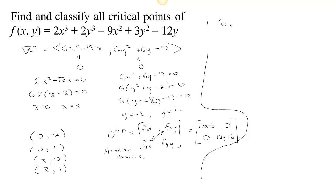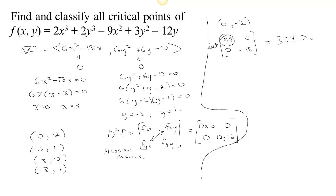Case 1: when x equals 0 and y equals negative 2, the second derivative matrix has entries negative 18, 0, 0, and negative 24 plus 6 equals negative 18. The determinant is 18 times 18, which is 324. Since that's greater than 0, it's either always concave up or always concave down. Looking at f sub xx, the second derivative in the x direction is negative, so it's concave down — and because the determinant is positive, it's concave down in all directions. Therefore this is a max.